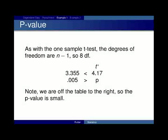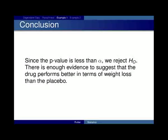Since we're testing at alpha 0.05, we're off the table to the right, so the p-value is very small. Since the p-value is less than alpha, we reject H0. There is enough evidence to suggest that the drug performs better in terms of weight loss than the placebo.